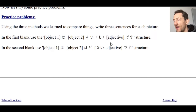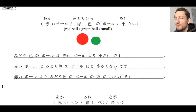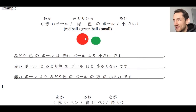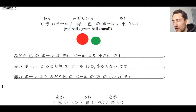The three structures are: object one, object two yori mo, adjective; object one, object two hodo, negative adjective; and object one yori mo, object two no hoga, adjective. As an example, we have the red ball and the green ball with the adjective small. We can see the green ball is smaller than the red ball. So: midori-iro no booru wa akai booru yori chiisai desu; akai booru wa midori-iro no booru hodo chiisaku nai desu; and akai booru yori midori-iro no booru no hou ga chiisai desu.